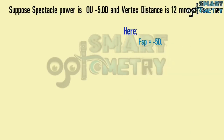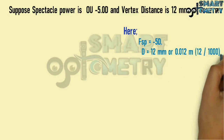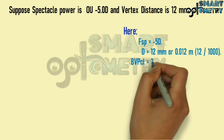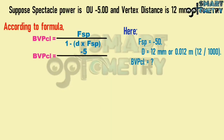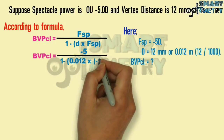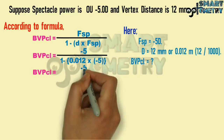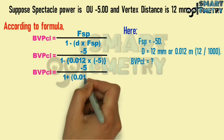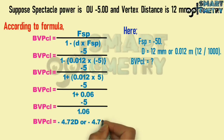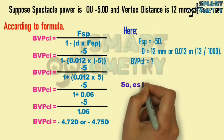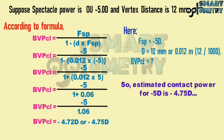FSP = −5 diopters, d = 12 mm = 0.012 m. Estimated contact lens power = −5 / (1 − 0.012 × −5) = −5 / (1 + 0.06) = −5 / 1.06 ≈ −4.72 diopters, rounded to −4.75 diopters. So the estimated contact lens power for a −5.00 D spectacle prescription is −4.75 diopters.